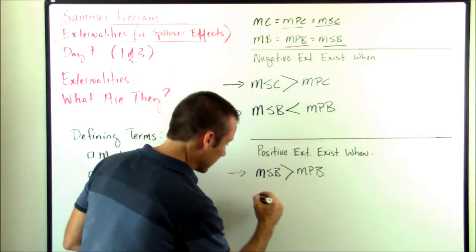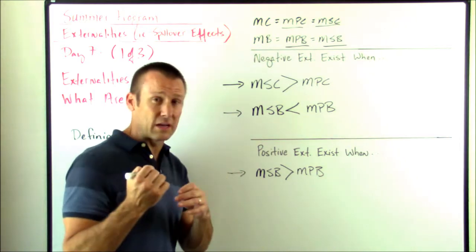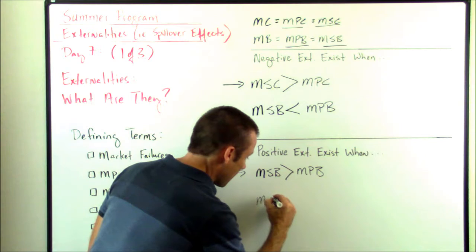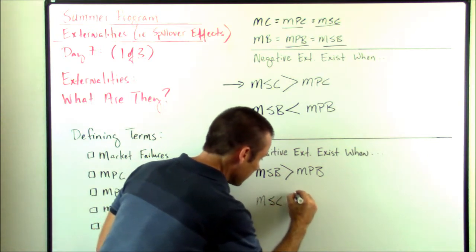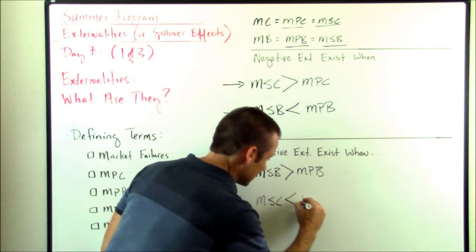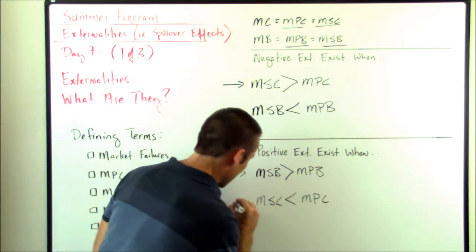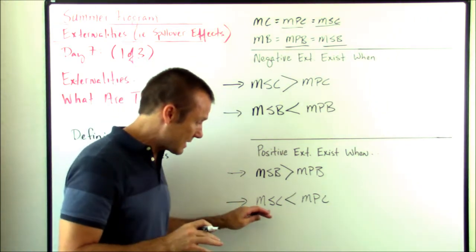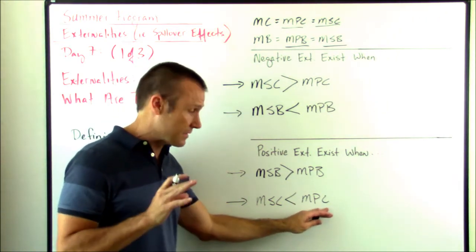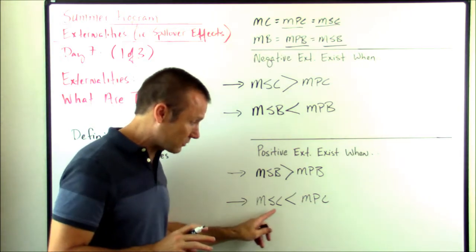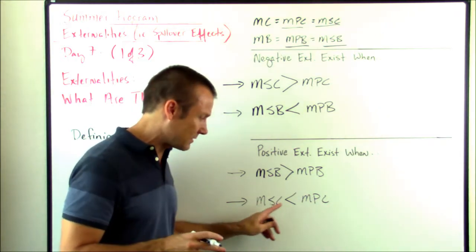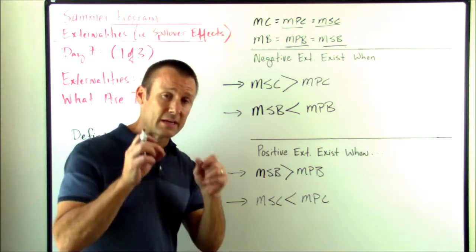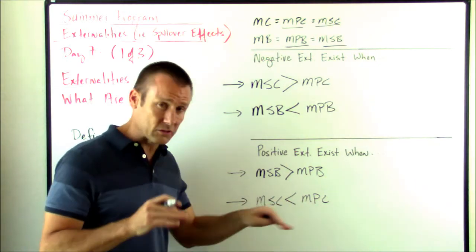On the production side, a positive externality exists from production when the marginal social cost is less than the marginal private cost. This is a positive externality from production. The MSC takes into account the MPC, but you can see it's actually less. Why is it less if MSC takes into account both MPC and the spillover effect?